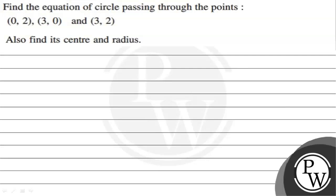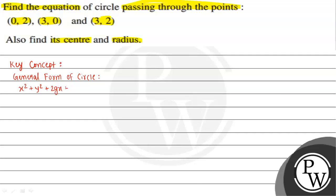Let's read the given question: find the equation of the circle passing through the points (0,2), (3,0), and (3,2), and also find its center and radius. The key concept is the general form of a circle: x² + y² + 2gx + 2fy + c = 0. The center is at (-g, -f) and the radius is √(g² + f² - c). We will use this to solve the question.